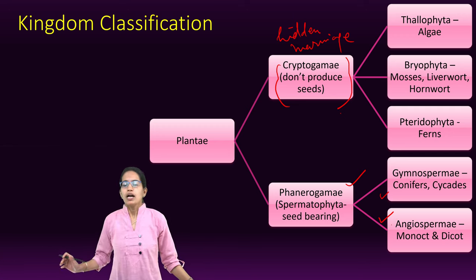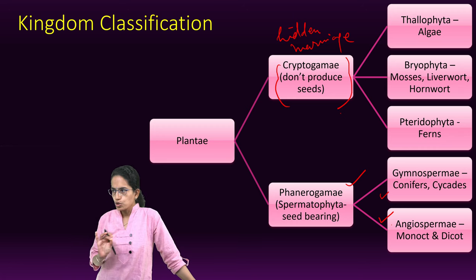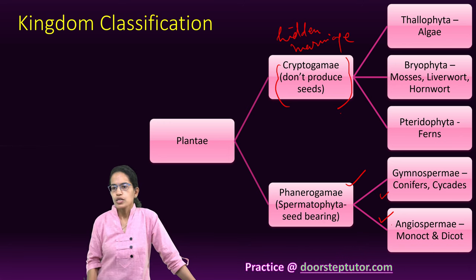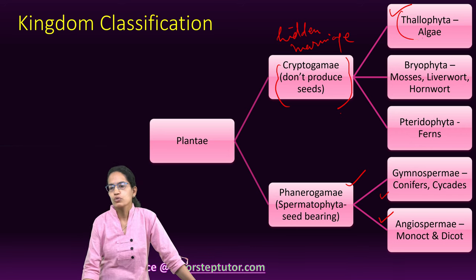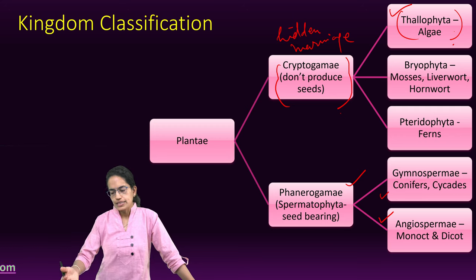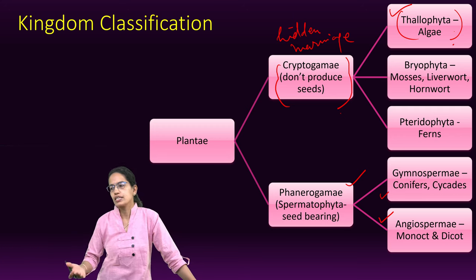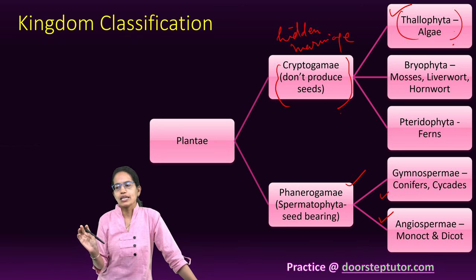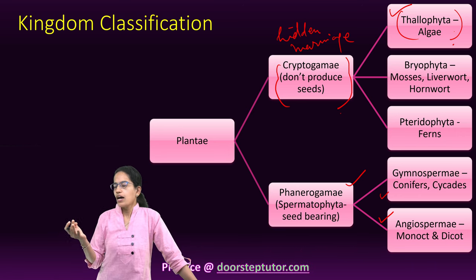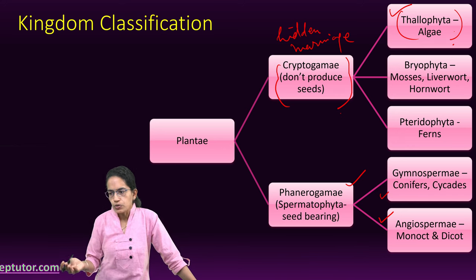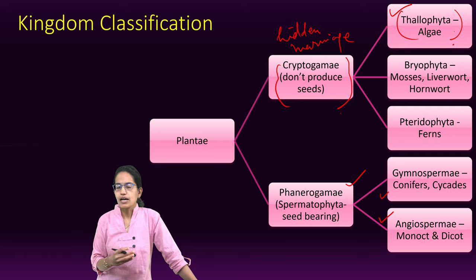Cryptogames do not produce seeds, have no true stem, root or leaves, and no vascular system. They reproduce solely by spores. Thallophyta is the first, and includes algae — the most primitive plants. They are not differentiated, synthesize their own food, are autotrophic, and can be present in fresh water or marine water. Algae are commonly green algae, brown algae and red algae. Green algae: Spirogyra and Ulothrix. Brown algae: Laminaria. Red algae: Nemalion.